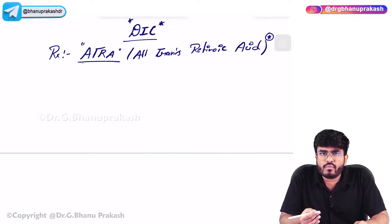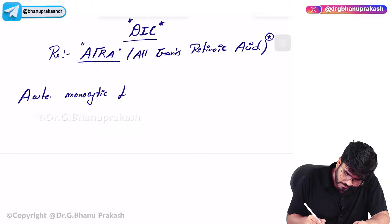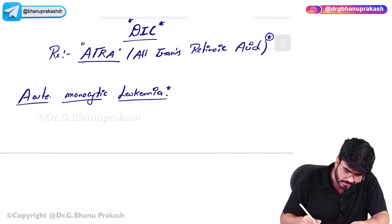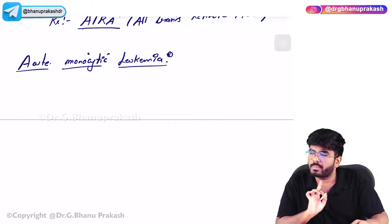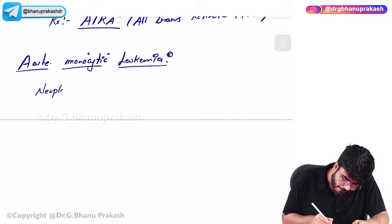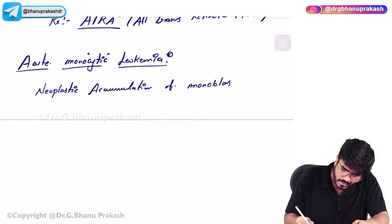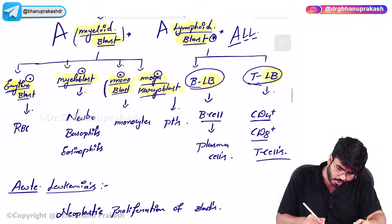The next type of AML is acute monocytic leukemia. In the name there is monocytic, but don't confuse - these are not mature monocytes, these are blasts. It is the neoplastic accumulation of monoblasts - these immature monoblast cells.